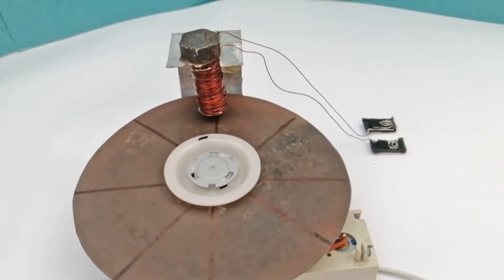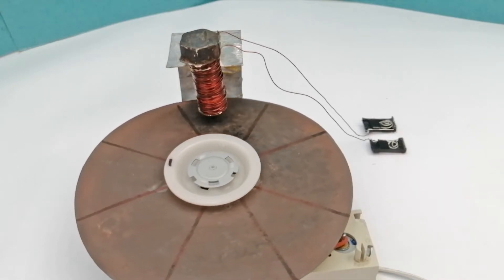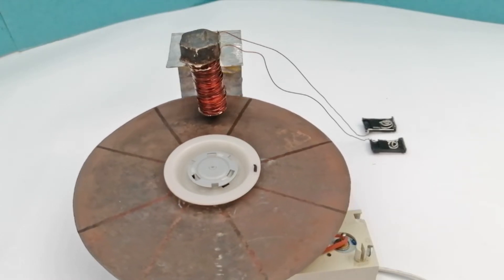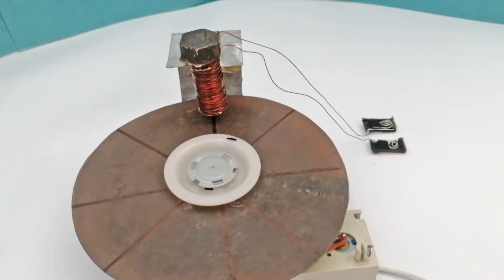We have permanently stored our data on the disk by magnetizing the 8 parts of the disk. But how will the data be read from it now? Reading data is even more interesting. Let's learn another concept first.